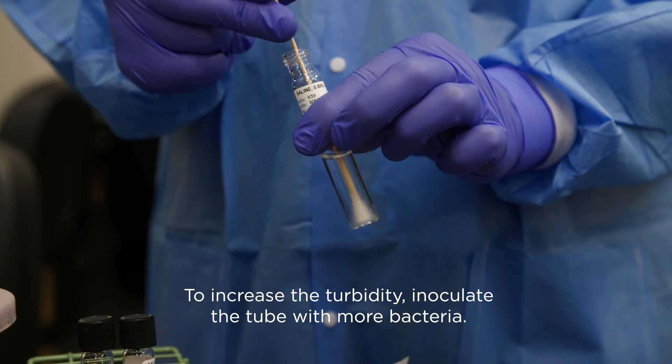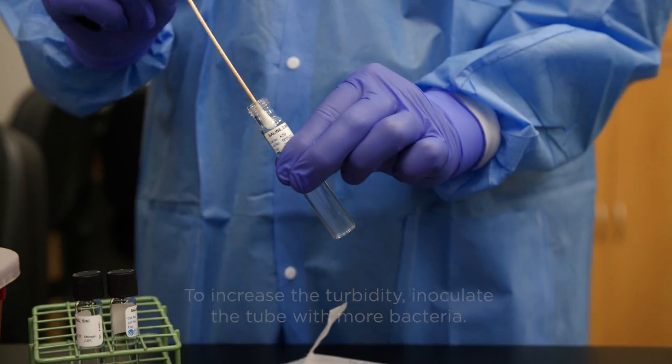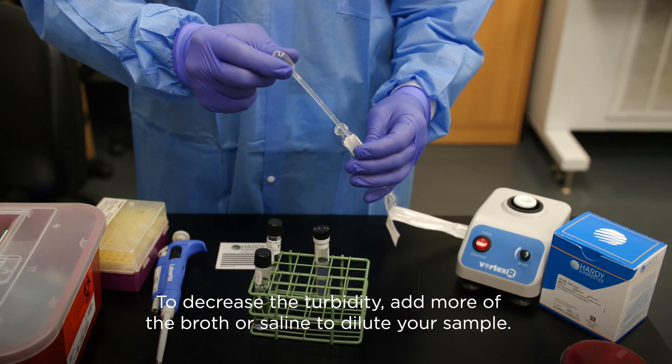To increase the turbidity, inoculate the tube with more bacteria from the swab. To decrease the turbidity, add more of the broth or saline to dilute your sample.